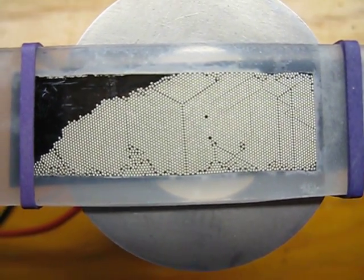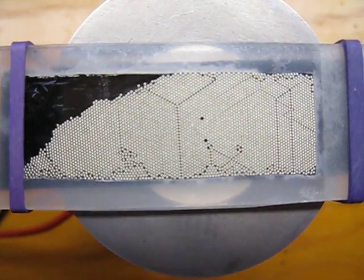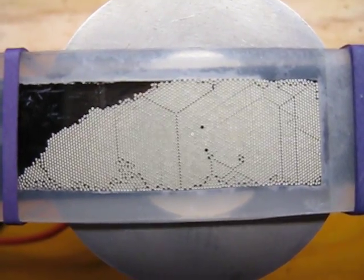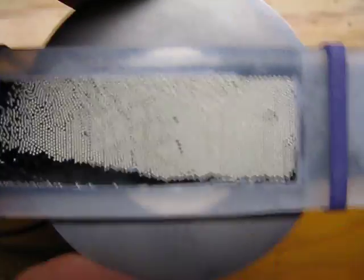Notice how the dislocations move out of the crystal and yet new ones are generated typically at the corners or a meeting place of two simulated grains.